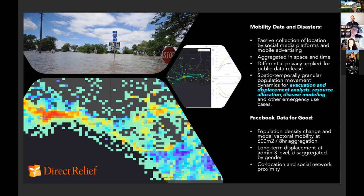This data is aggregated in space and time — it looks at chunks of movement of groups, so it has particular affordances around how we understand changes in groups. There's been a significant move recently towards applying differential privacy, which is a mathematical process that allows for release of data containing individuals without revealing identity and without being able to back-calculate it.